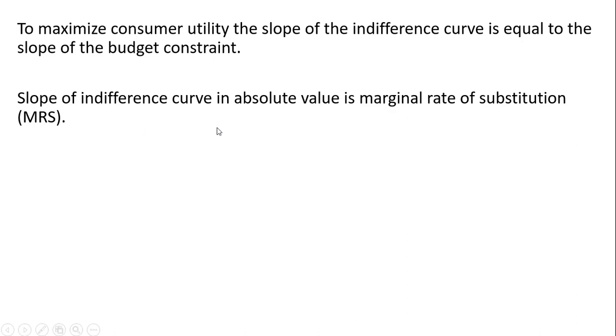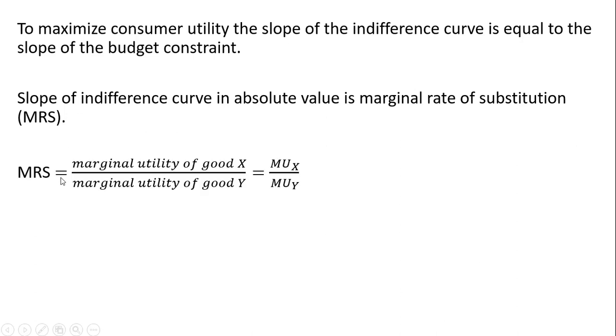The slope of the indifference curve in absolute value is the marginal rate of substitution, and the marginal rate of substitution is the marginal utility of good X divided by the marginal utility of good Y.